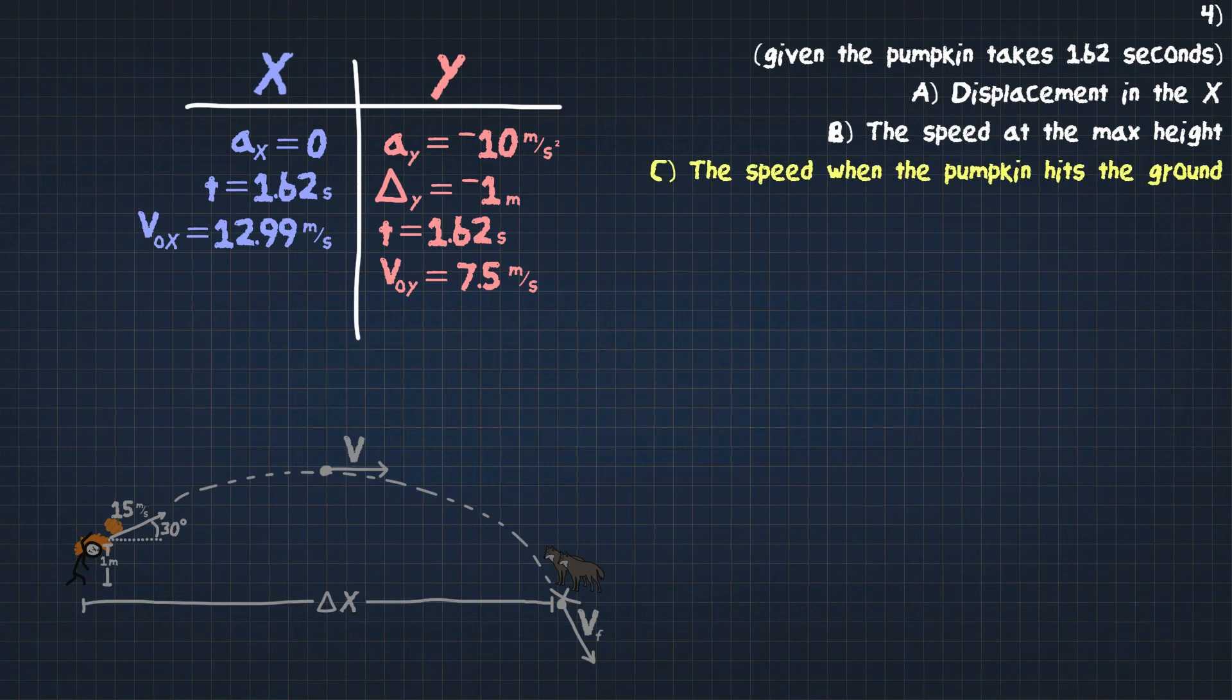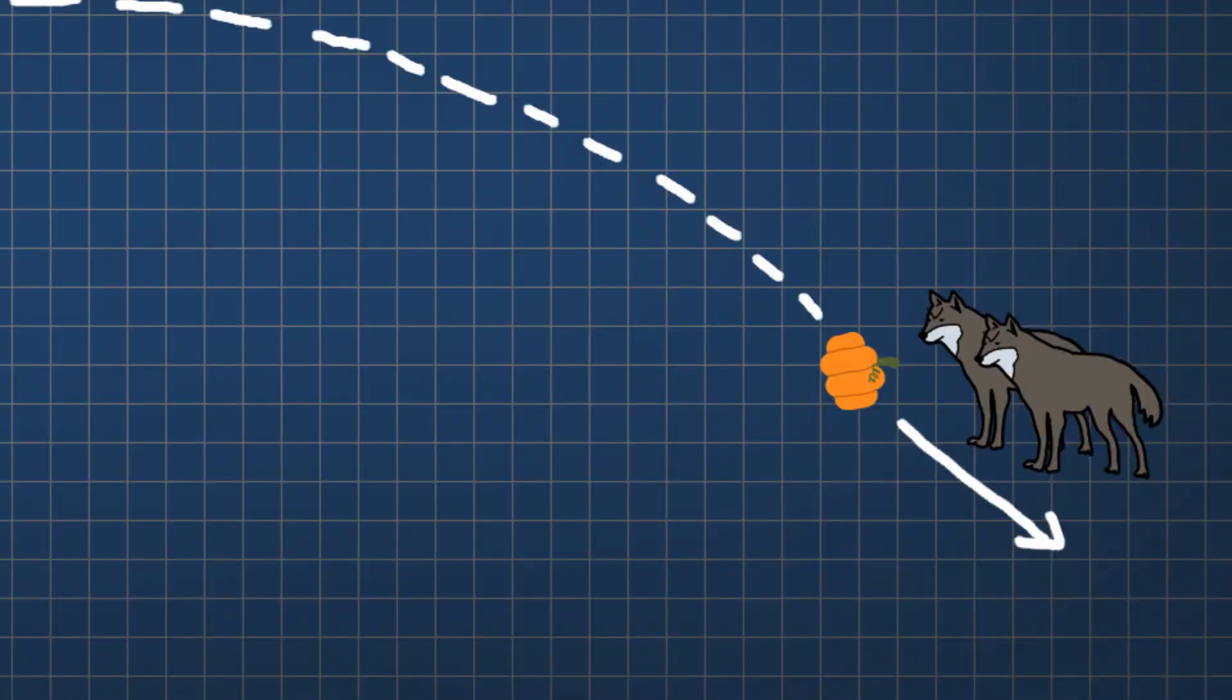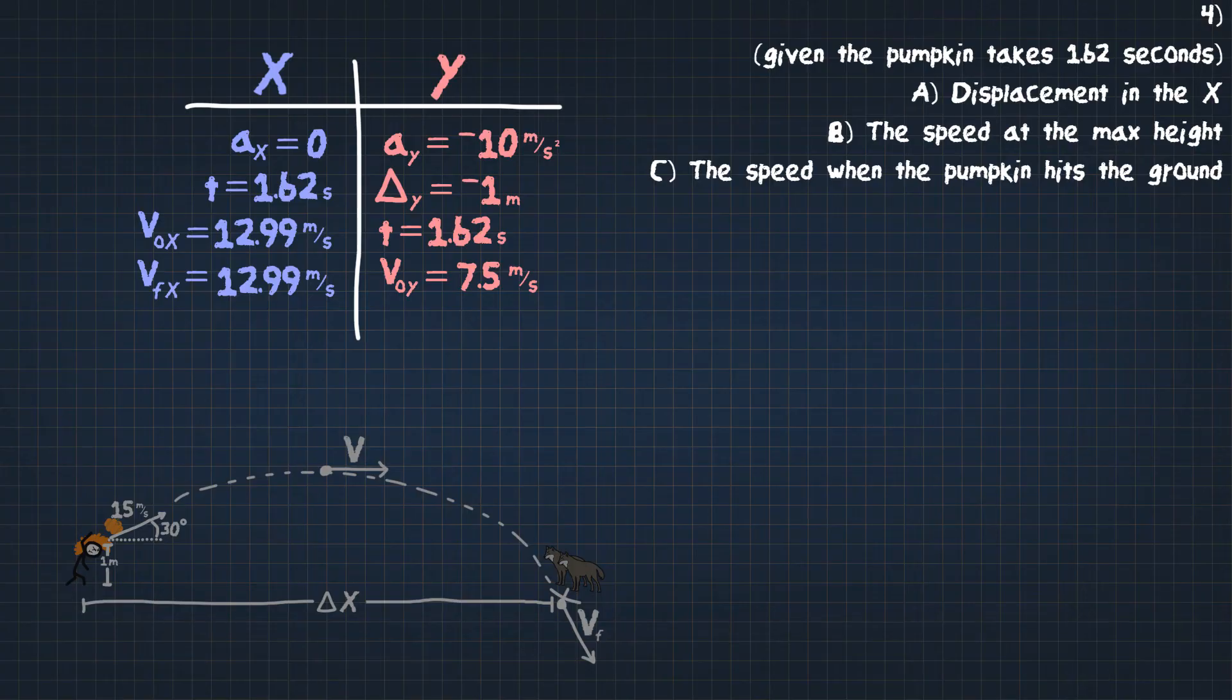What is the speed when the pumpkin hits the ground right here? We know the x. The x is always the same. It's going to be 12.99 meters per second. But we don't know what the velocity is in the y direction - the final velocity in the y direction. So we have to find what that is. We have a few formulas that we can use to find what this v final is, but I'm going to just use this top one right here.